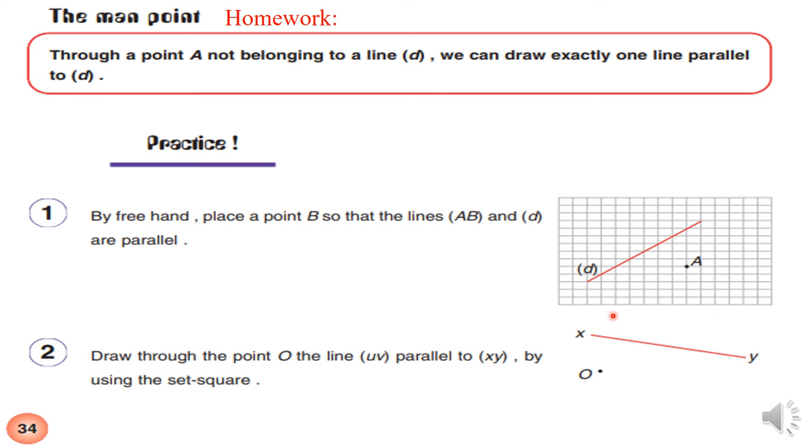Then, we join A and B together, okay? Draw through the point O, the line (xy) parallel to (xy) by using the set square. You have to use the same way as the activity. You have first to draw a perpendicular line to (xy). Then, you have to draw a perpendicular line to the line that you drew right now. Then, passing through the point O, okay? And you get two parallel lines. Okay?